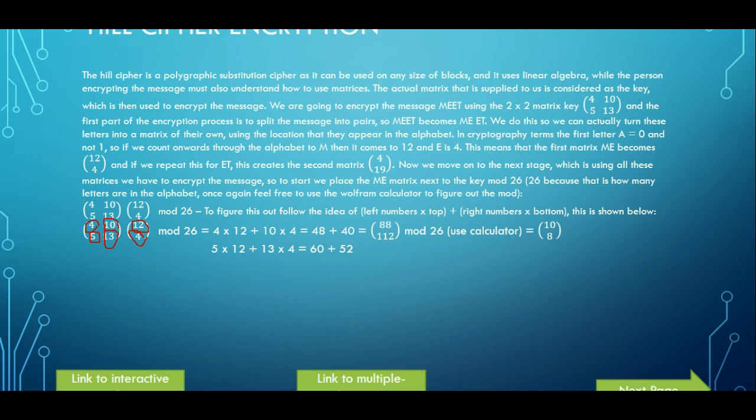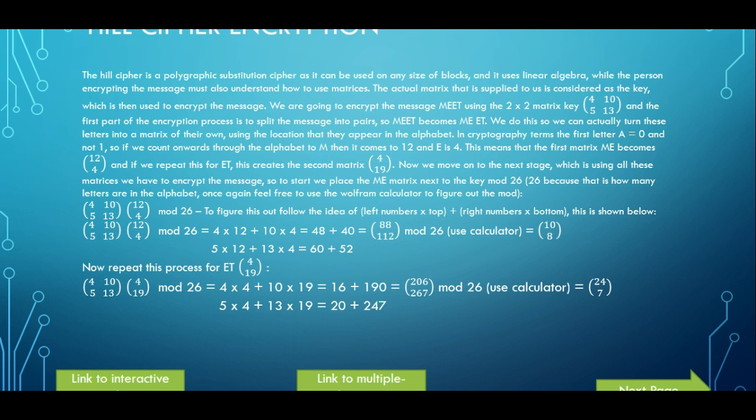So we move on to the second part of our message which is ET. So ET was 4 and 19, so once again we repeat the same process we just did. So 4 times 4,